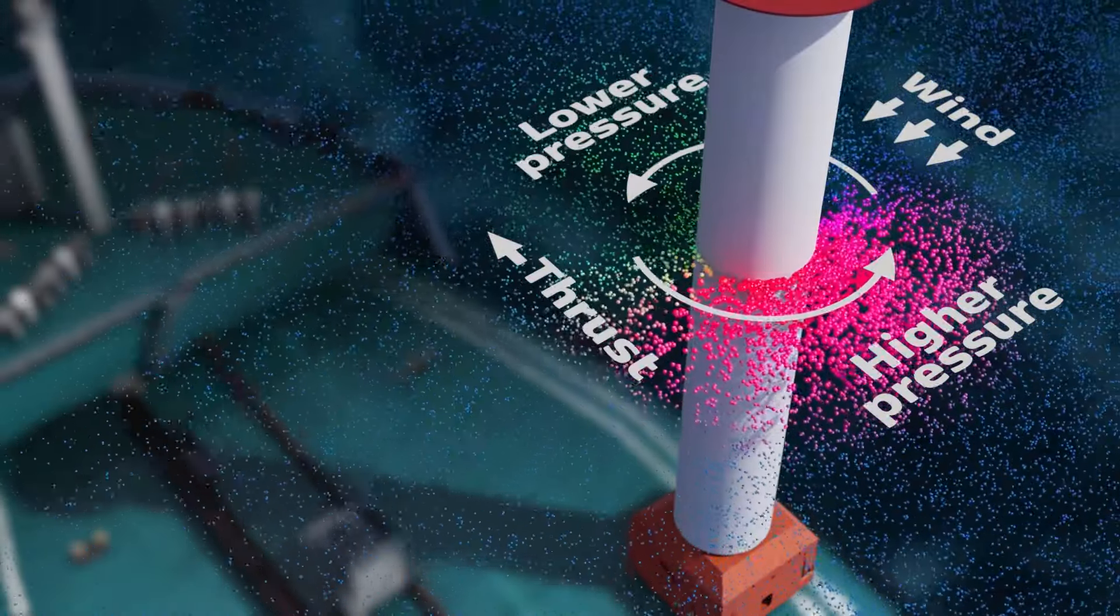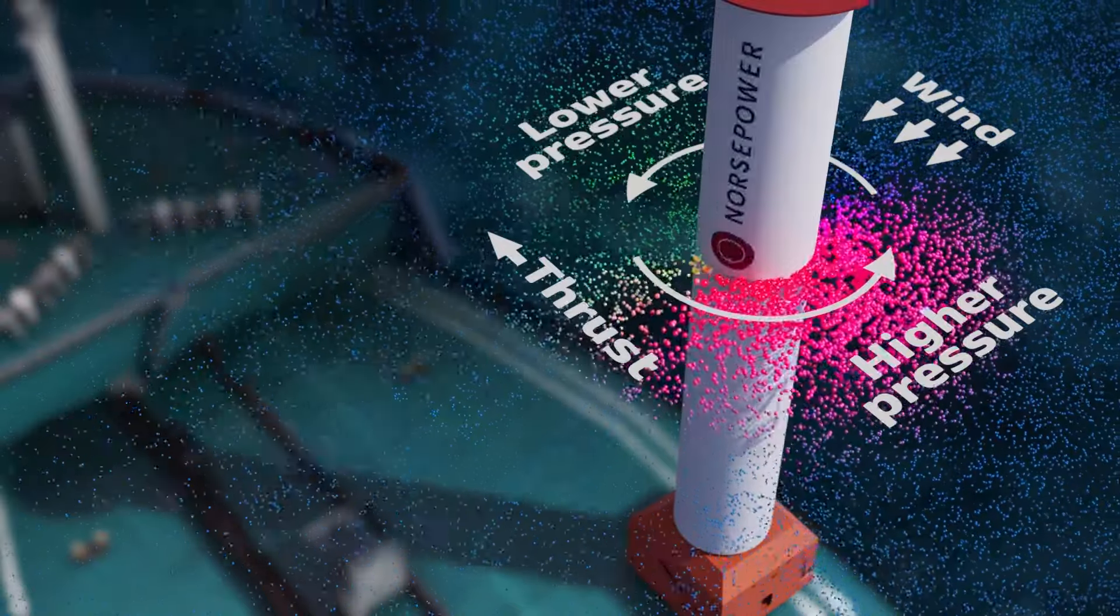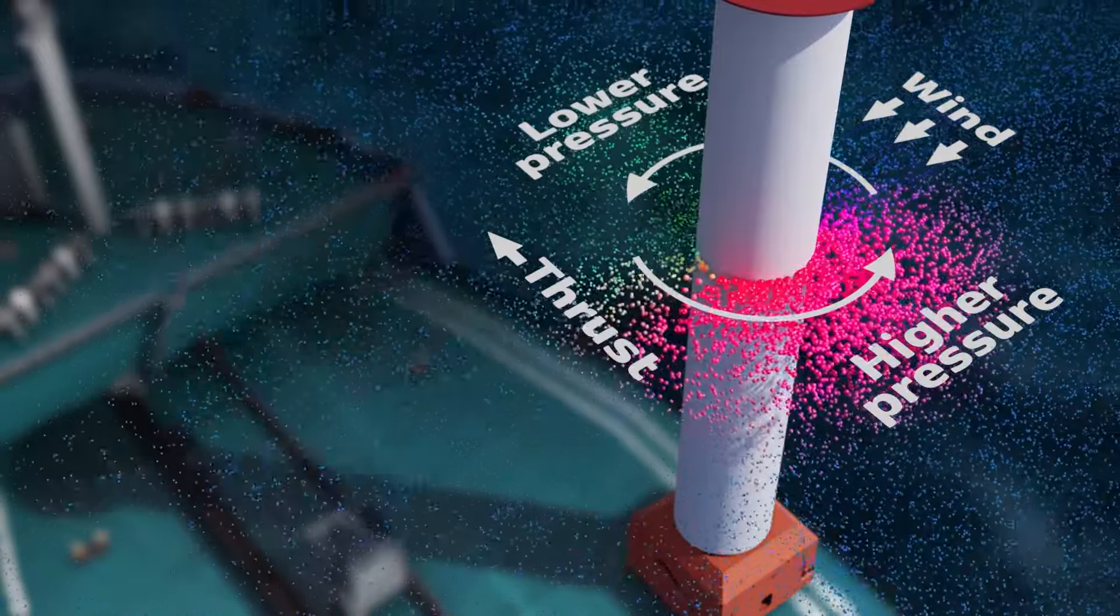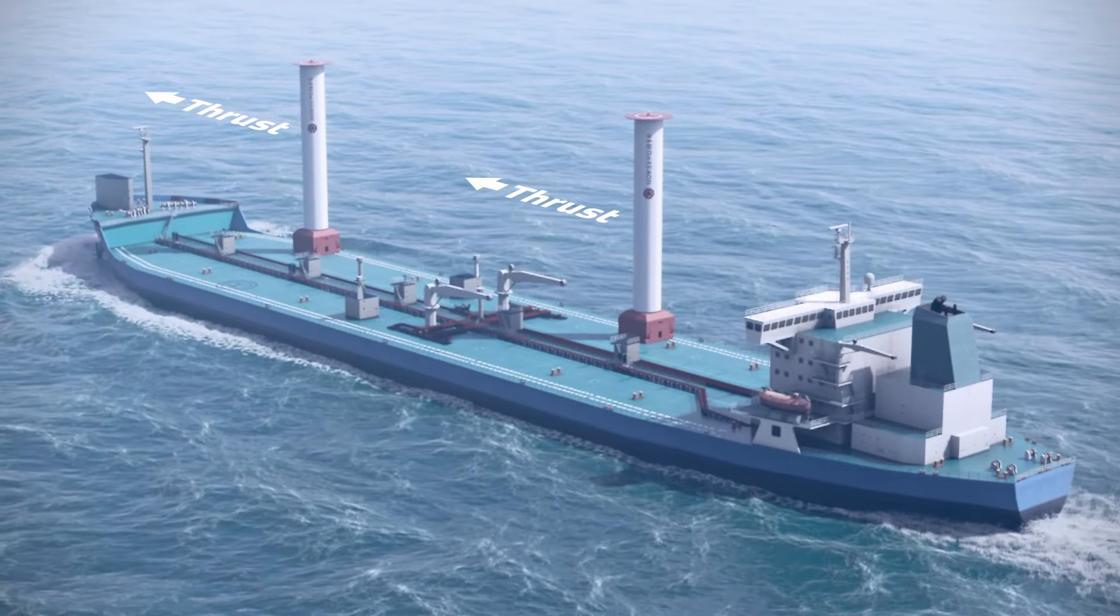The spinning sail compresses air on the back side and thins it on the front. The pressure difference creates such powerful thrust it can move even huge ships.